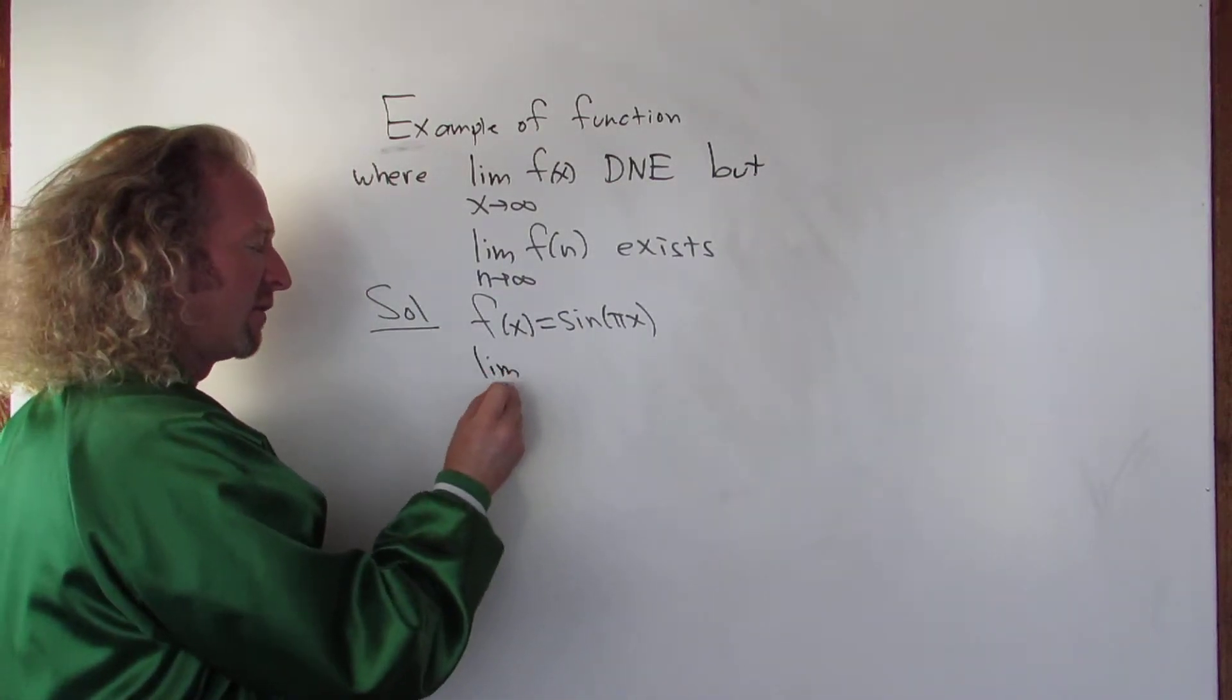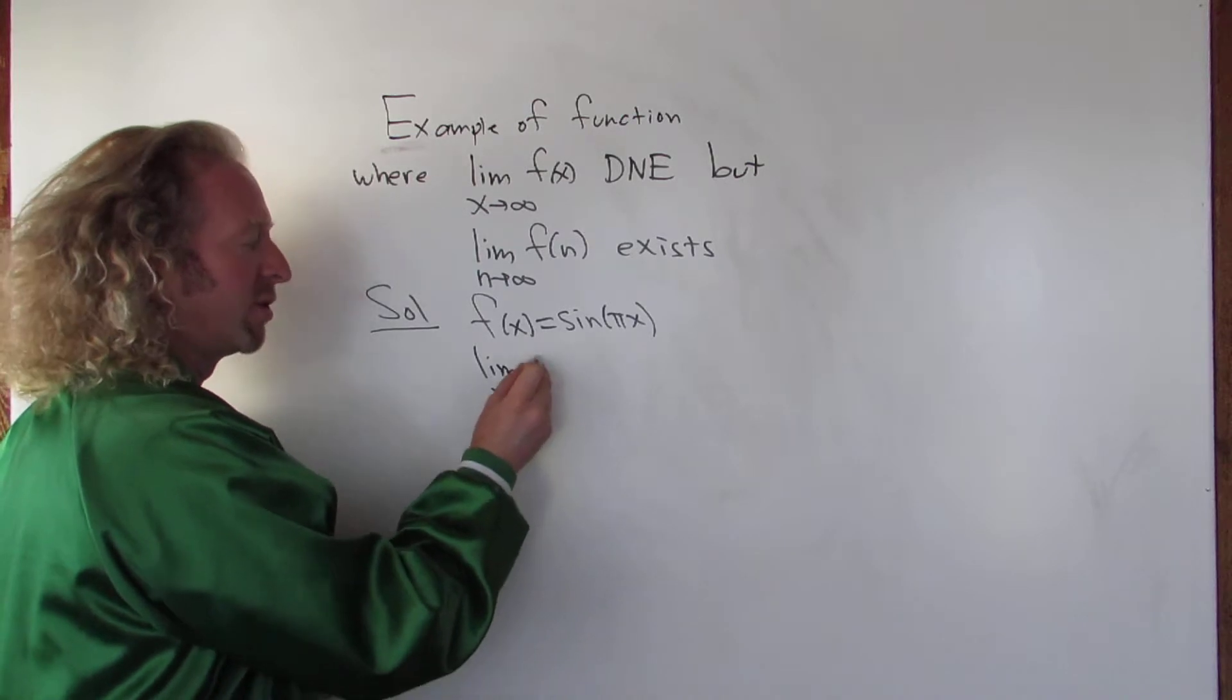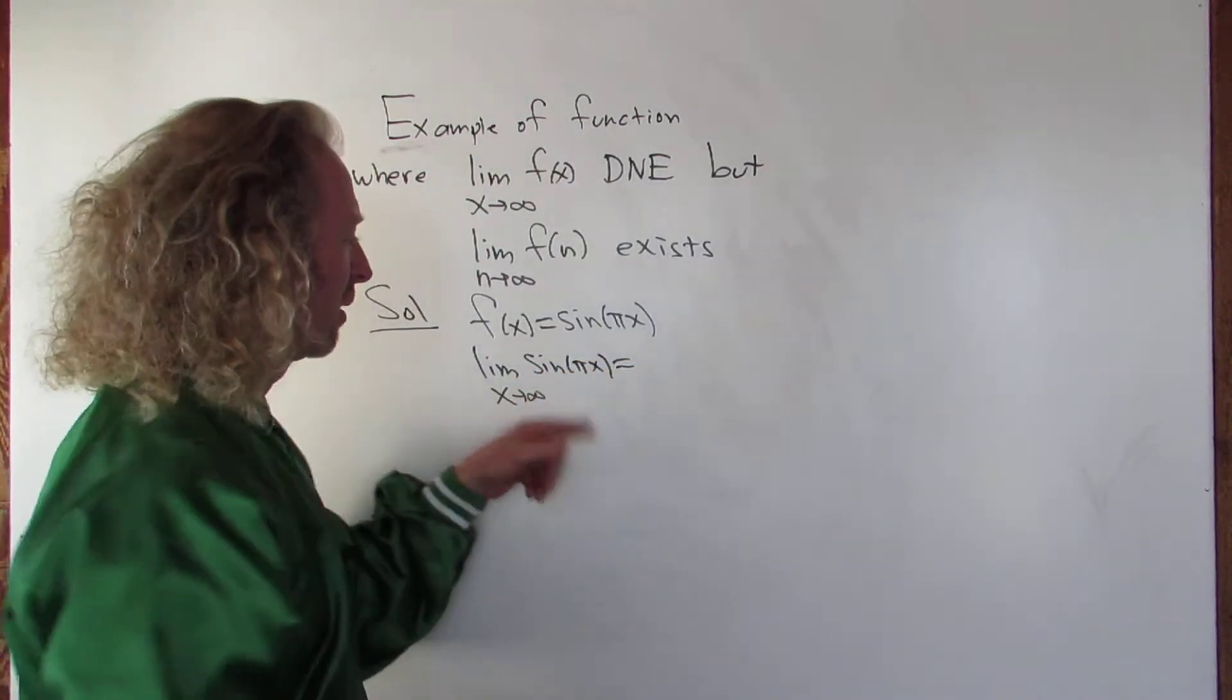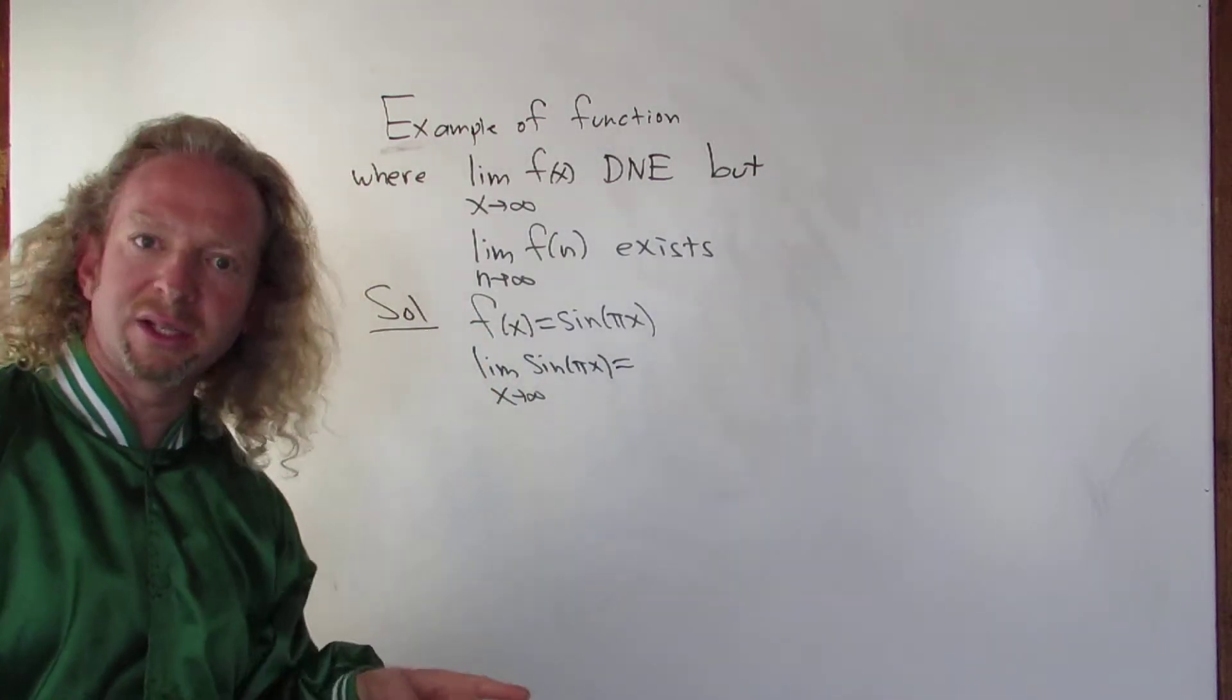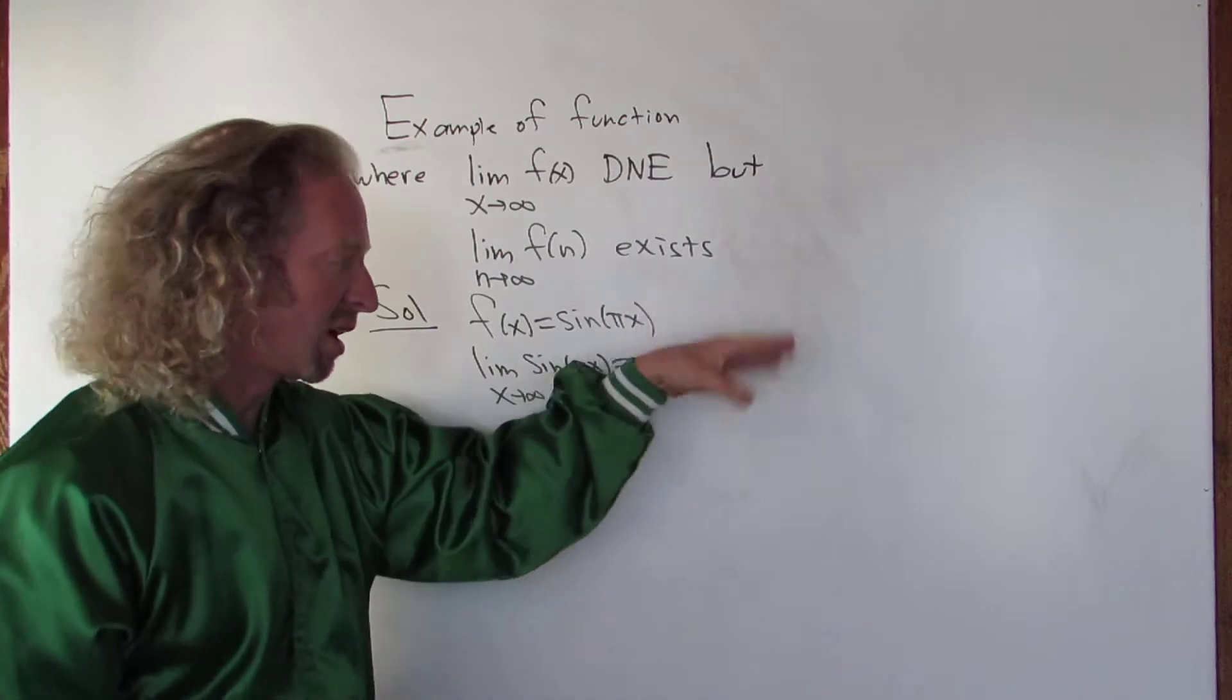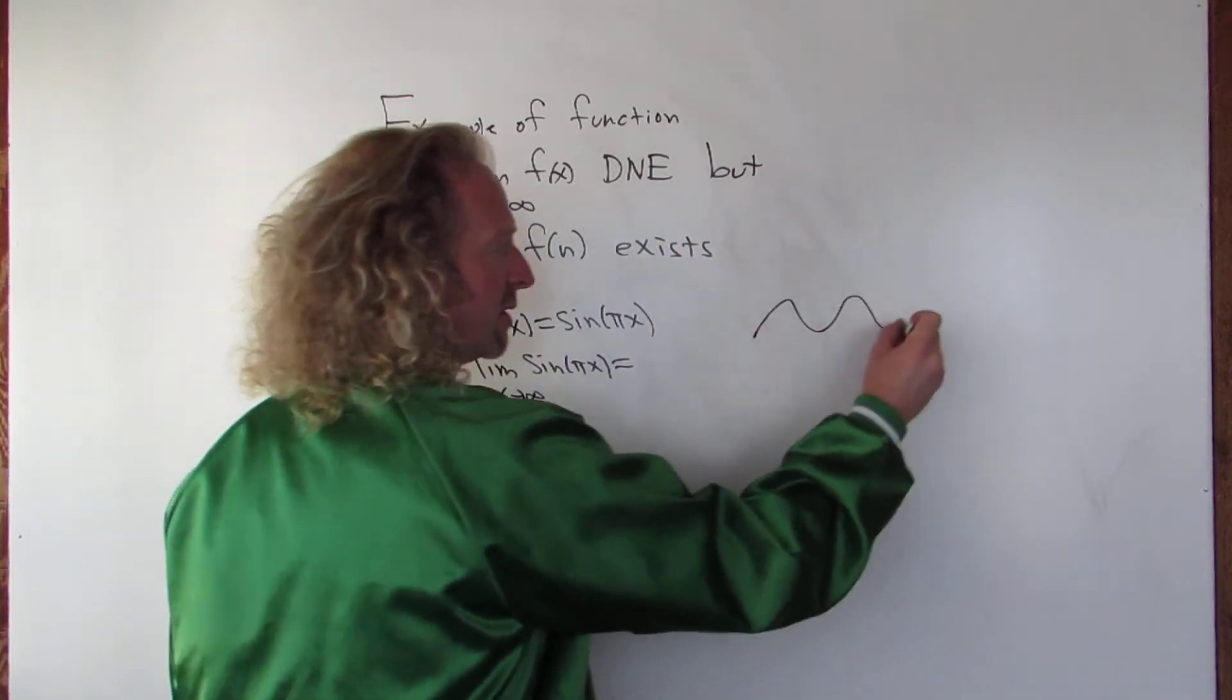If you take the limit of this function as x approaches infinity, well it's the sine function so it oscillates. And x here can be any number, so this is just going to oscillate forever. So this is DNE, this has no limit.